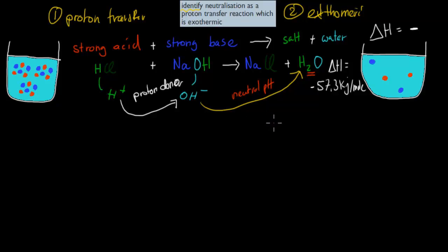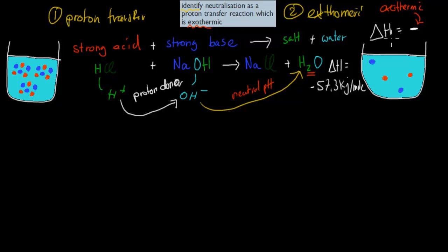Now the other part is that it says it's exothermic. If you remember, this is delta H, and delta H is minus. Delta H being minus means it's exothermic. So whenever we have a base and an acid come together in a neutralization reaction, the actual reaction itself is exothermic, which means it gives off energy.